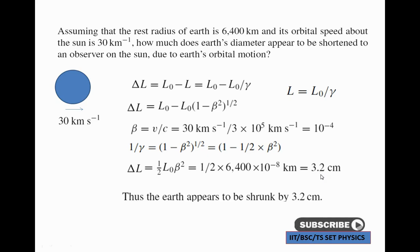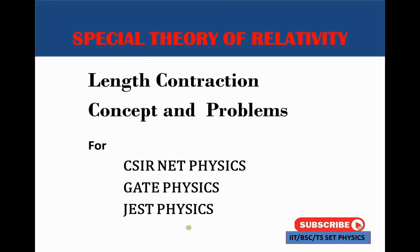So the Earth appears shortened by 3.2 centimeters as seen from the sun. The observer on the sun sees the Earth's diameter decreased by 3.2 centimeters. If you have any doubts about the special theory of relativity, please comment in the comment section. Thank you.